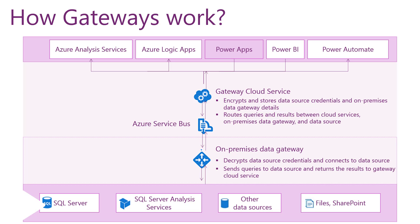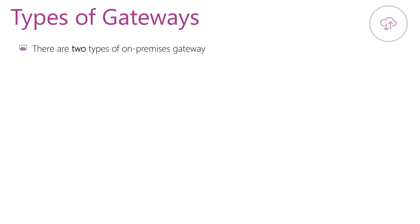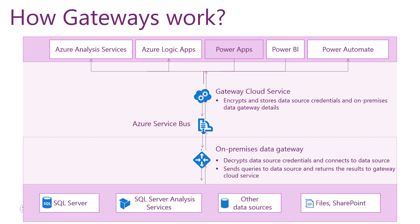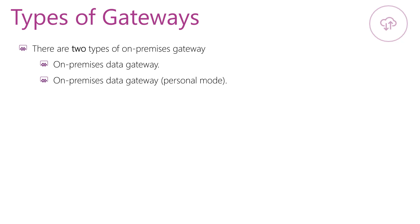There are two types of on-premises gateways. The first is the on-premises data gateway, which allows multiple users to connect to multiple on-premises data sources. This type is well suited to complex scenarios with multiple people accessing multiple data sources. The second type is the on-premises data gateway in personal mode, which allows one user to connect to sources and cannot be shared with others. It is suitable for Power BI where you are the only person creating reports and you don't need to share any data sources.